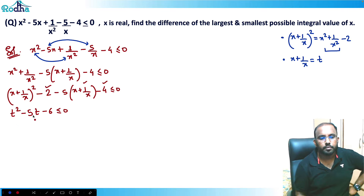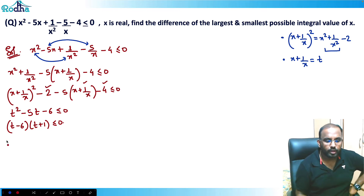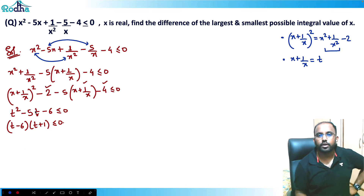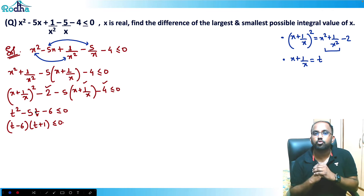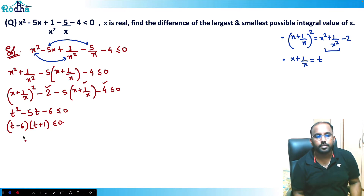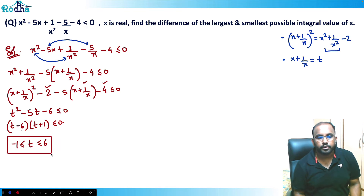So here the factors give -6 and 1. It becomes (t - 6)(t + 1) ≤ 0. The roots are 6 and -1. In a quadratic, whenever it is less than or equal to sign, the values lie between those roots. So t is between -1 and 6: -1 ≤ t ≤ 6.